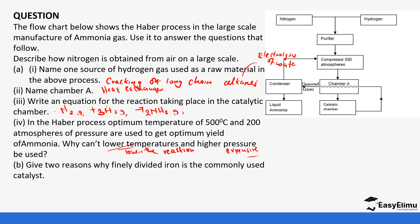Give two reasons why finely divided iron is commonly used as the catalyst. First, it is very cheap and available — iron is one of the most abundant metals. Second, it increases the surface area for the reaction. The fact that it is finely divided — ground up — means the reaction can occur faster on its surface, increasing the surface area for the reaction. That brings us to the end of the questions. Next we are going to look at other properties of ammonia, specifically its use in making fertilizers, and we will look at which is the best fertilizer to use. See you in the next lesson.